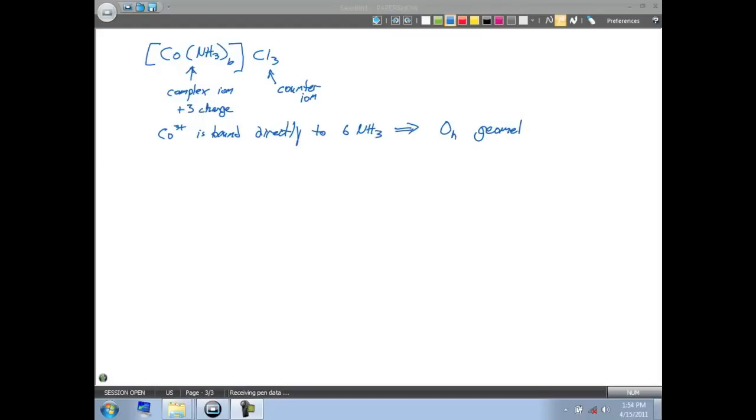So if we wanted to draw this and draw them in three dimensions, we have the cobalt at the center and we're going to surround this with 6NH3s. Learn to think and be able to draw these shapes in three dimensions, because when we go and we start talking about some more of the advanced concepts here, you're going to have to be able to visualize these things in three dimensions. So if we have this cobalt complex, we draw all six of these NH3s directly bound to it.